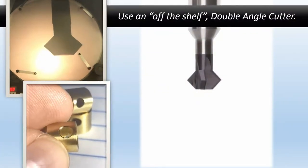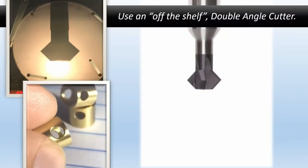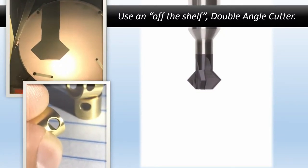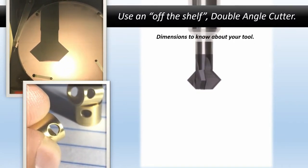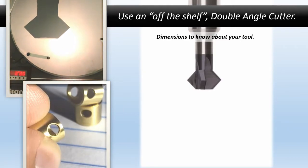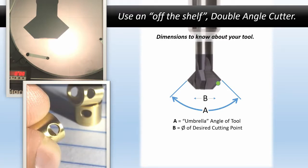We use an off-the-shelf double angle cutter. You can get this cutter pretty much anywhere; there's really nothing special about it, but there are some dimensions you need to know about your tool. There's a word called the umbrella angle—A is the umbrella angle of the tool, B is the diameter of the desired cutting point, and C is the height of the desired cutting point.